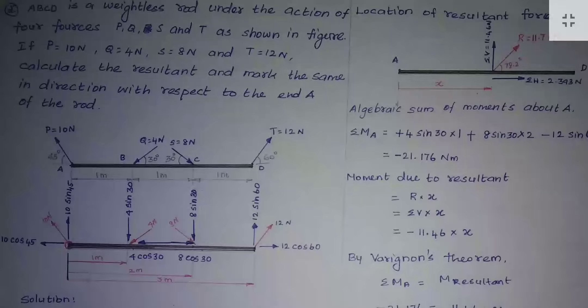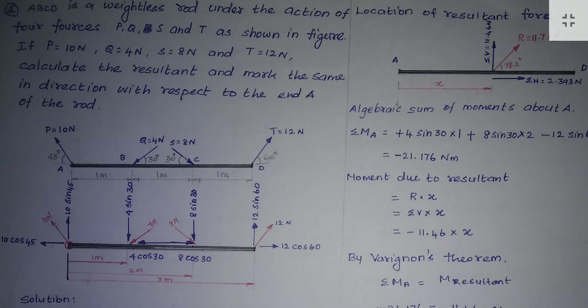Students, in this lesson let us solve one problem on location of resultant force. Here, ABCD is a weightless rod — weightless means the self-weight of the rod is not needed to consider in this problem. The rod is under the action of four forces P, Q, S, and T, with given values. We have to find the resultant and its location.